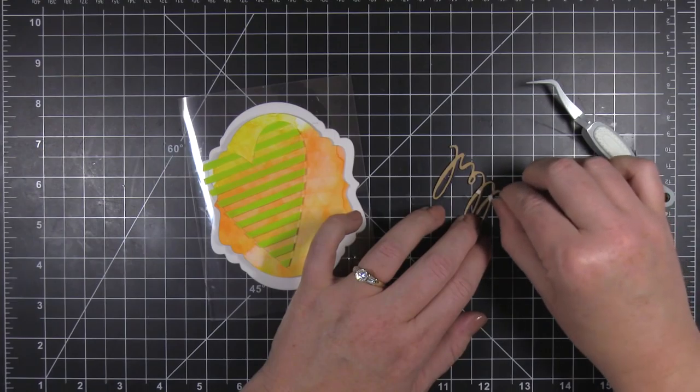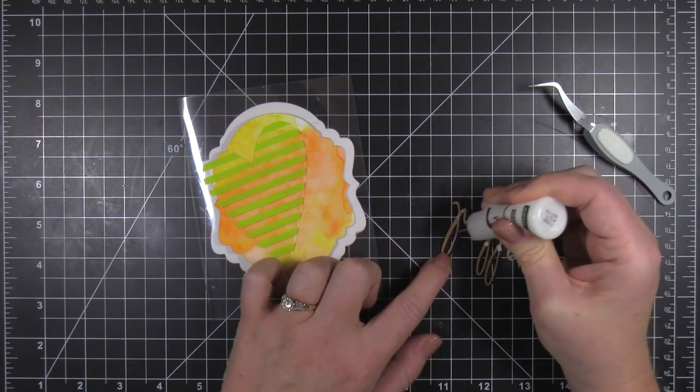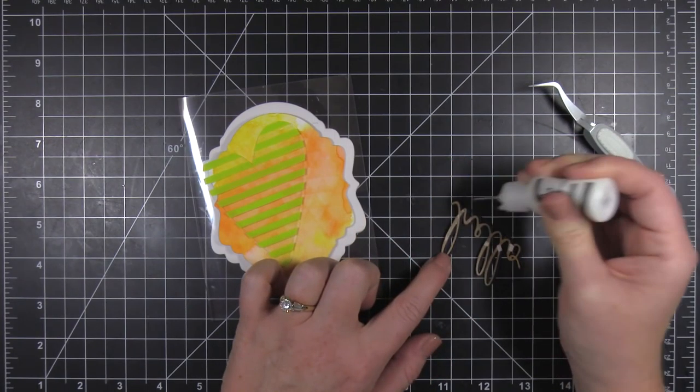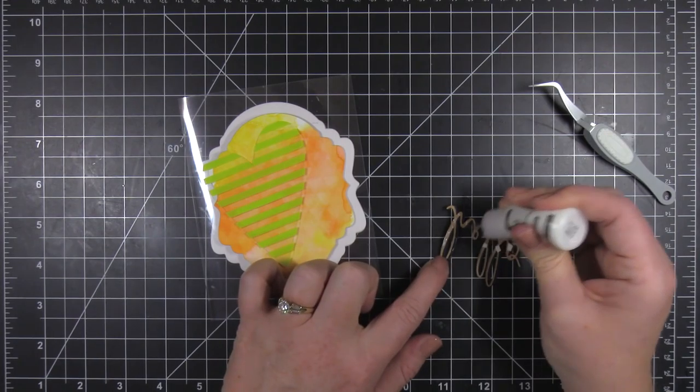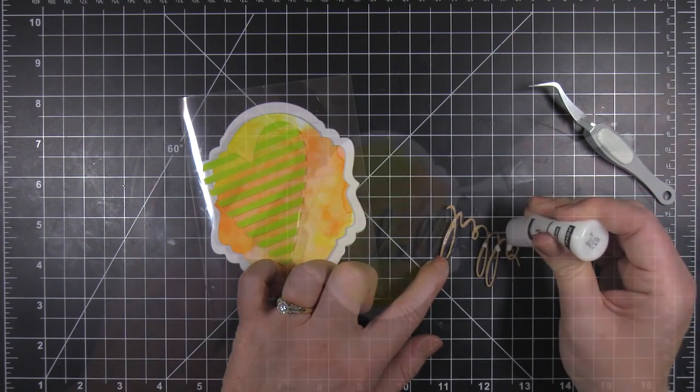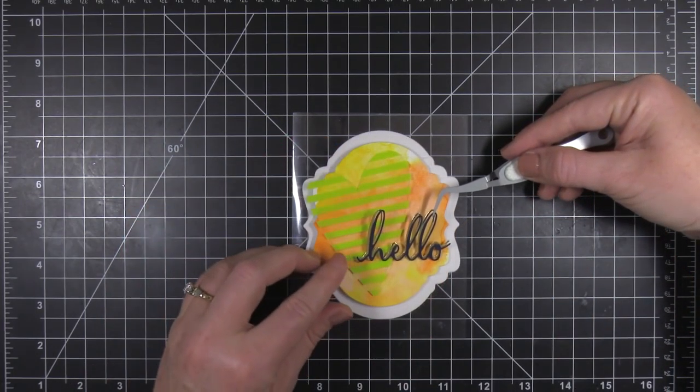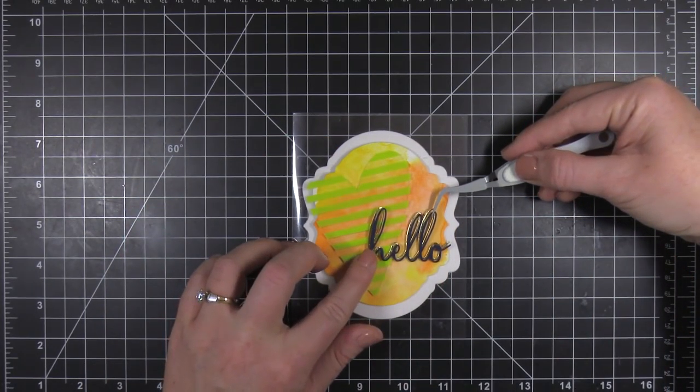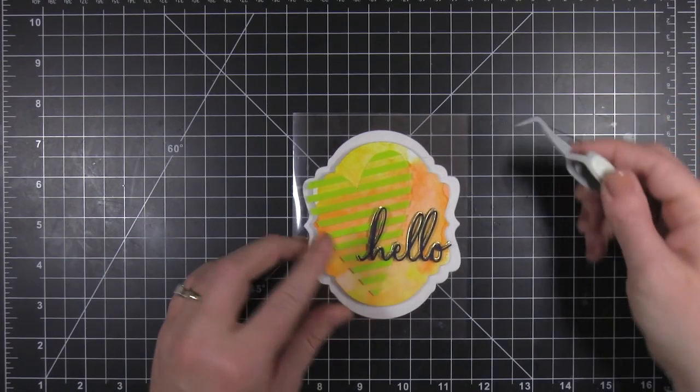And then I added some foam adhesive to the right side of my sentiment. And I added a little multi matte medium to the left side of the sentiment. And I'm going to place that on to where it's overlapping that heart as well. So lucky for me, those stripes perfectly hid that foam adhesive.